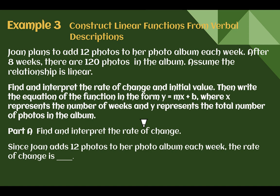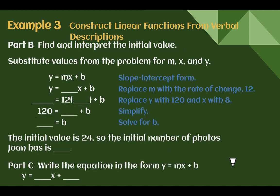Example 3: Construct linear functions from verbal descriptions. Joan plans to add 12 photos to her photo album each week. After 8 weeks, there are 120 photos in the album. Assume the relationship is linear, where x represents the number of weeks and y represents the total number of photos. Let's find the rate of change: she adds 12 photos each week — wherever she started, she adds 12, then 12 again, and so on. So our rate of change is 12.